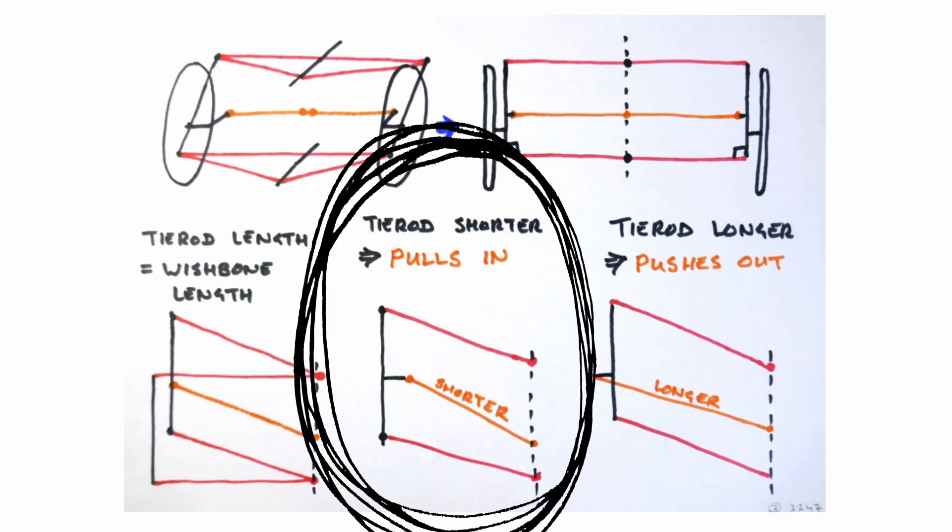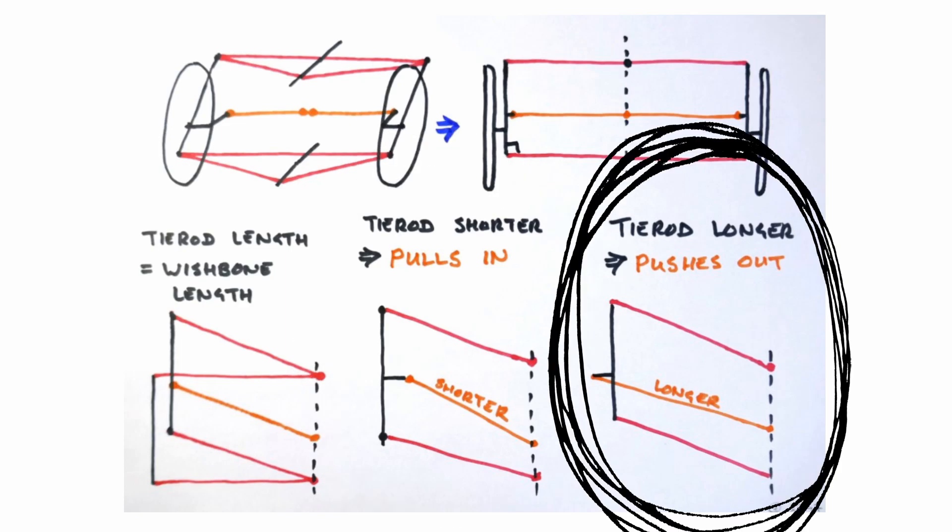If it is shorter it will pull inwards as the trike leans or as the suspension compresses. This will cause the steered wheels to toe out if the steering arms are to the rear of the swivel axis or to toe in if the steering arms are in front of the swivel axis. Conversely if the tie rods are longer than the wishbones they will pull outwards as the trike leans causing the opposite effect.